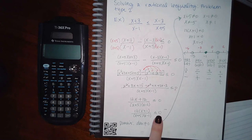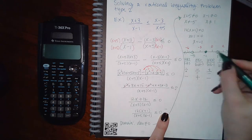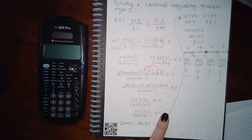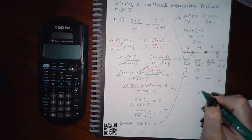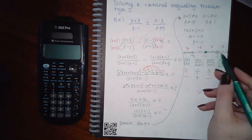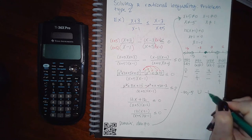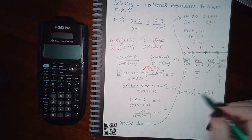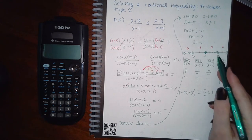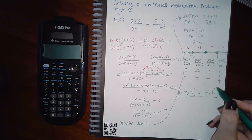Going back to the inequality — less than 0 means I should only be looking for the negative regions, which are the first and third regions. There is a gap between them, so I will have a union in my interval notation. Going from left to right: negative infinity to negative 5 — infinity gets parenthesis, open dot gets parenthesis — union — negative 1 to 1: solid dot gets bracket, open dot gets parenthesis. And this is the final answer.